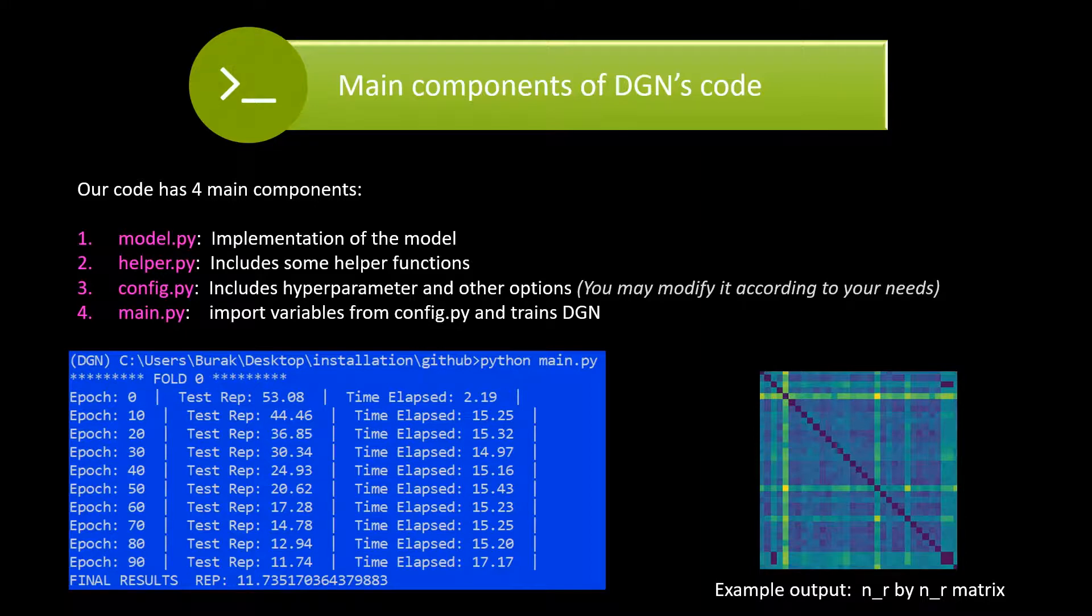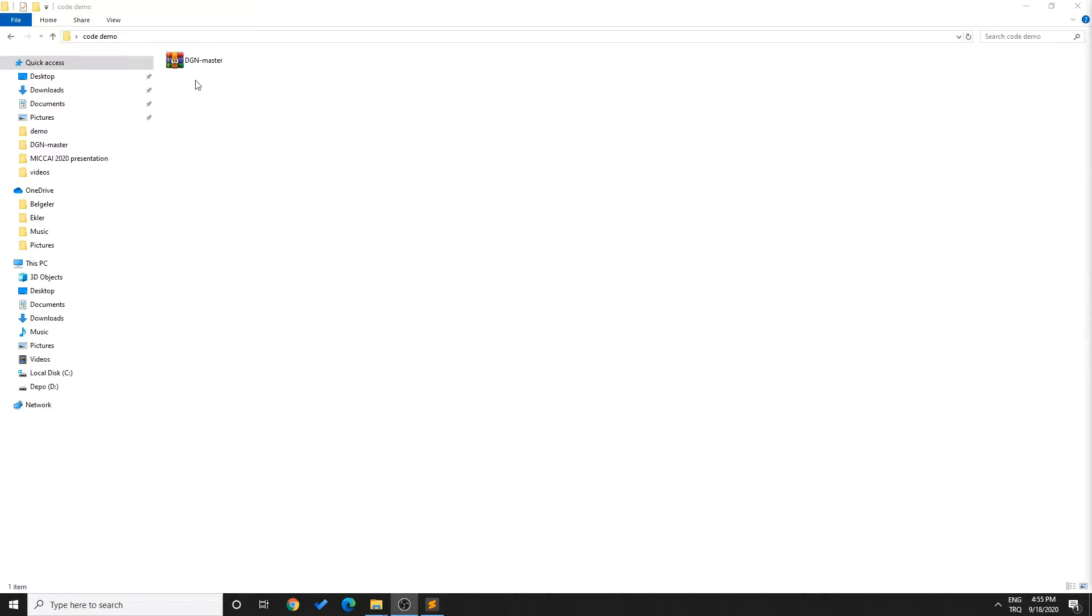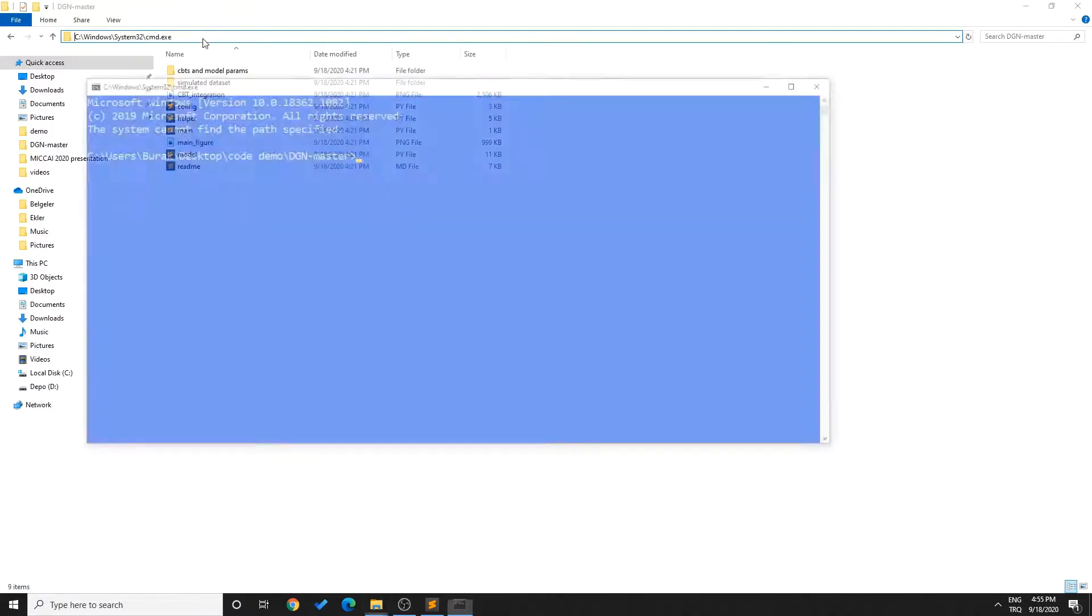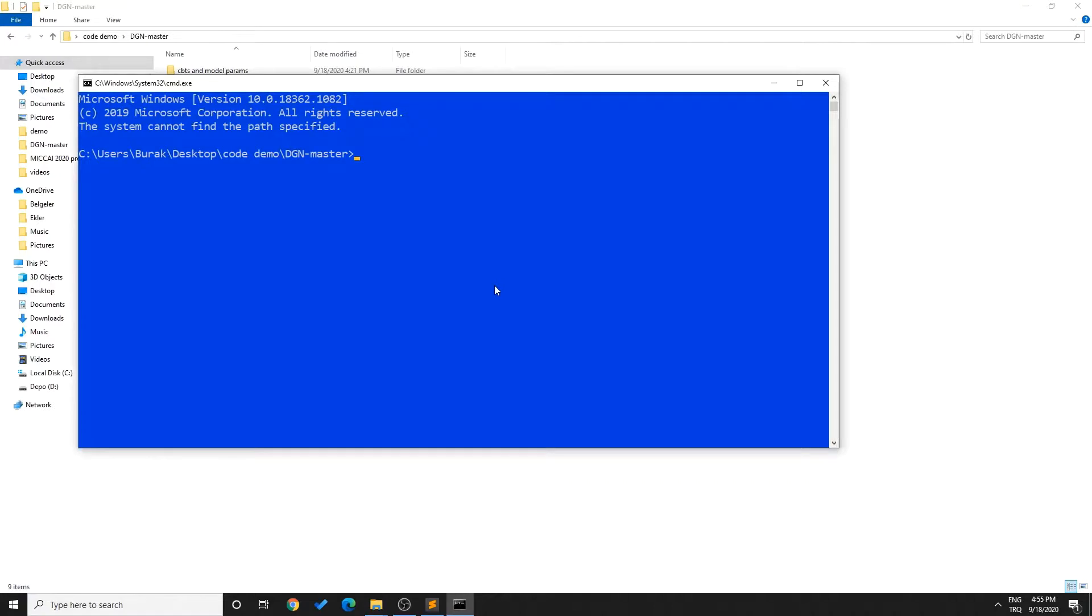Now to better explain how to run DGN, I will make a quick demo. First, extract the files you have downloaded from our GitHub page. Then go to the directory of DGN and open up a terminal. Next, type in conda activate DGN to activate the conda environment.